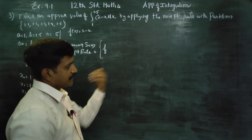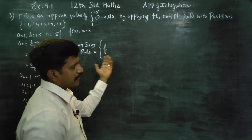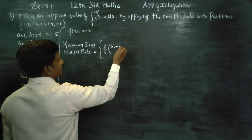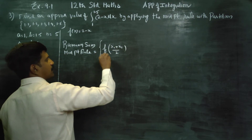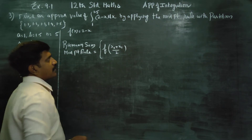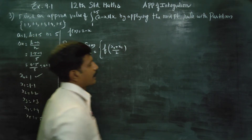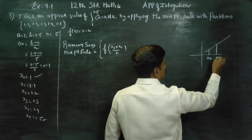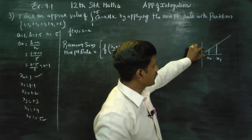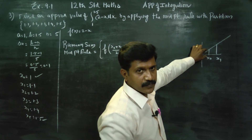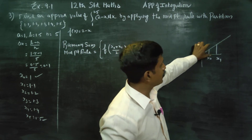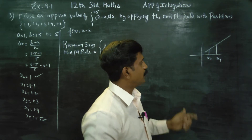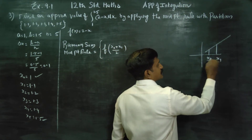F of x0 is the left end rule, f of x1 is the right end rule. x0 plus x1 by 2 is the midpoint rule — that is, one interval, one rectangle. The midpoint rule takes the average of the two endpoints: x0 plus x1 divided by 2. This gives you the center point, and the area is length into breadth for each rectangle, then we add them all.